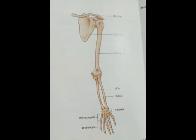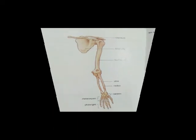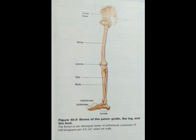The fore limb bones are: Upper arm — Humerus; Lower arm — Radius and Ulna; Wrist — Carpals; Palm — Metacarpals; Fingers — Digits. The second girdle is the Pelvic girdle, found in the hip region. Bones of the legs are attached to the pelvic girdle.